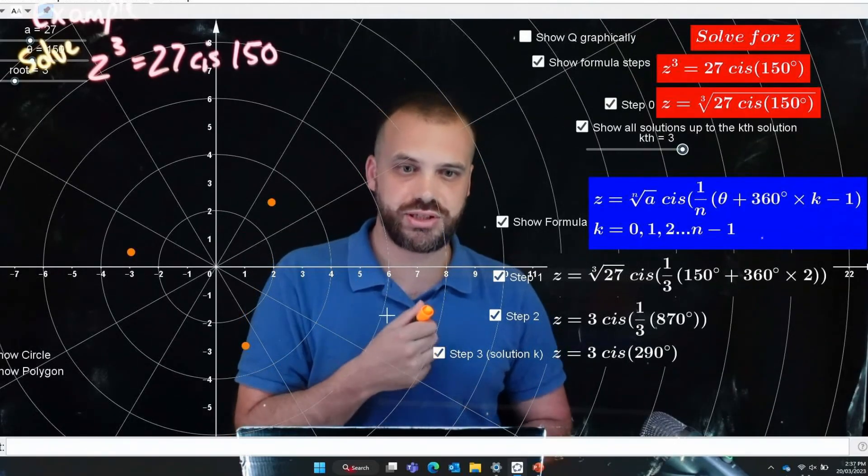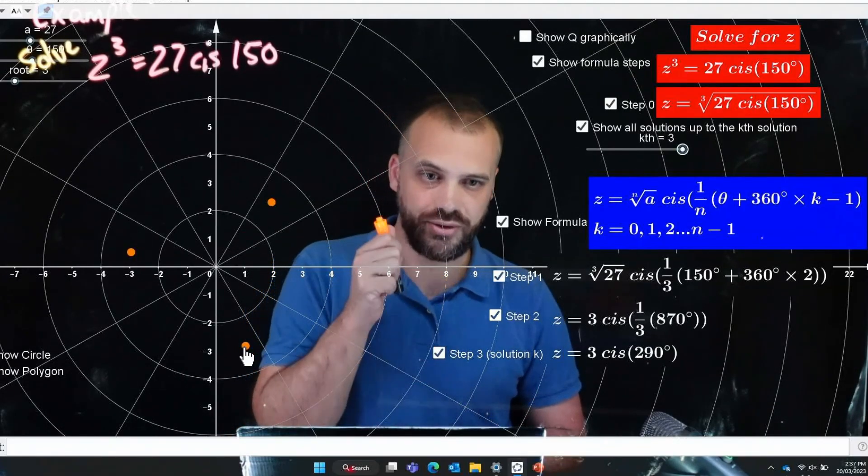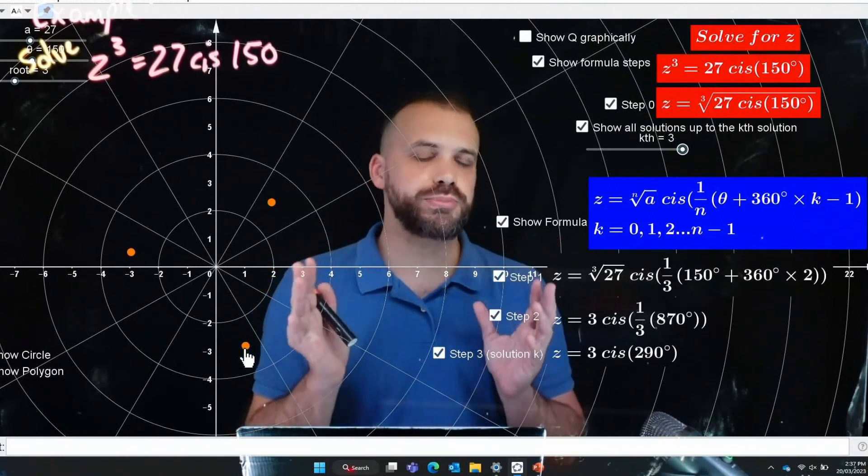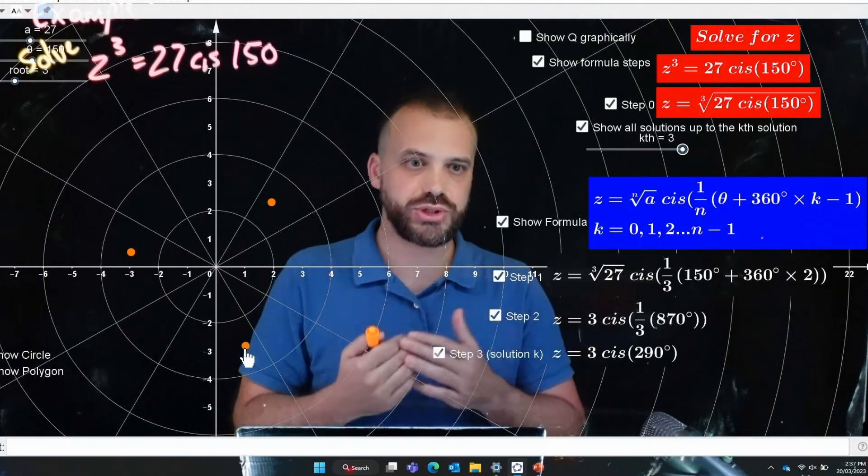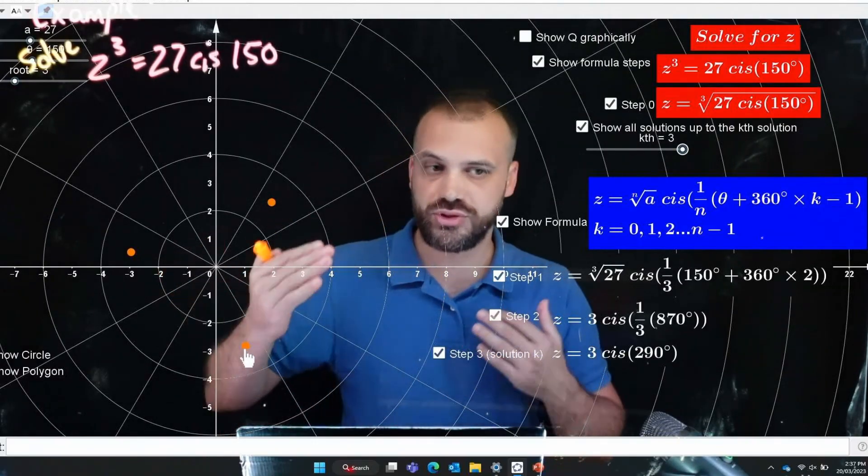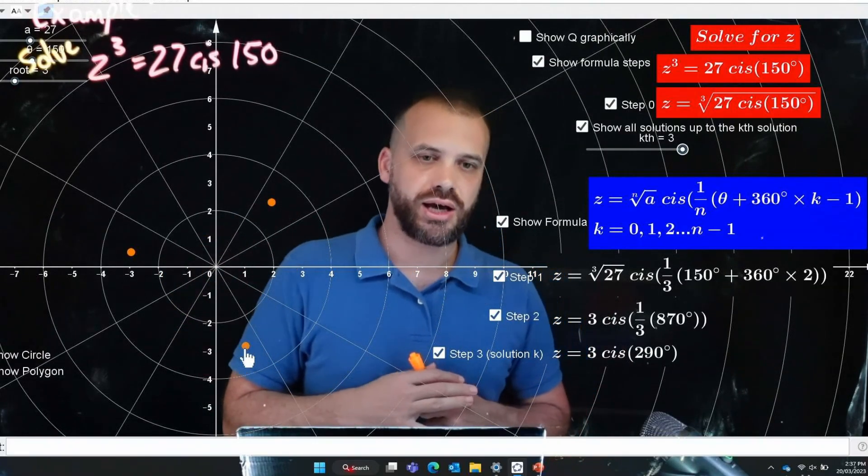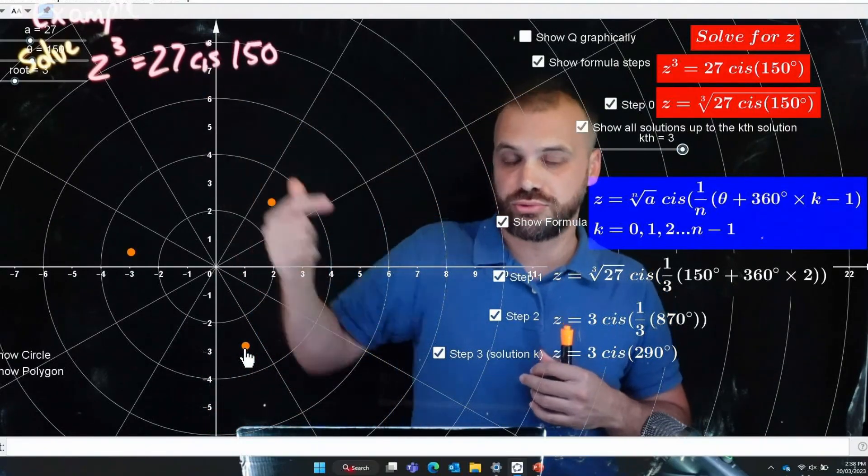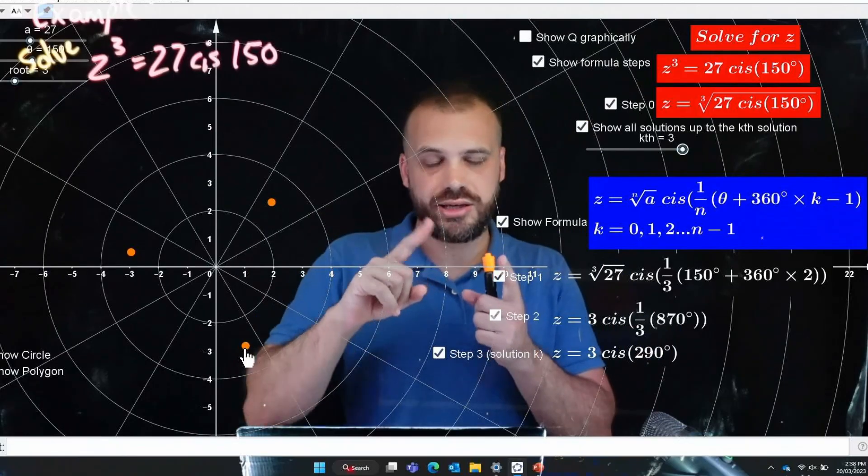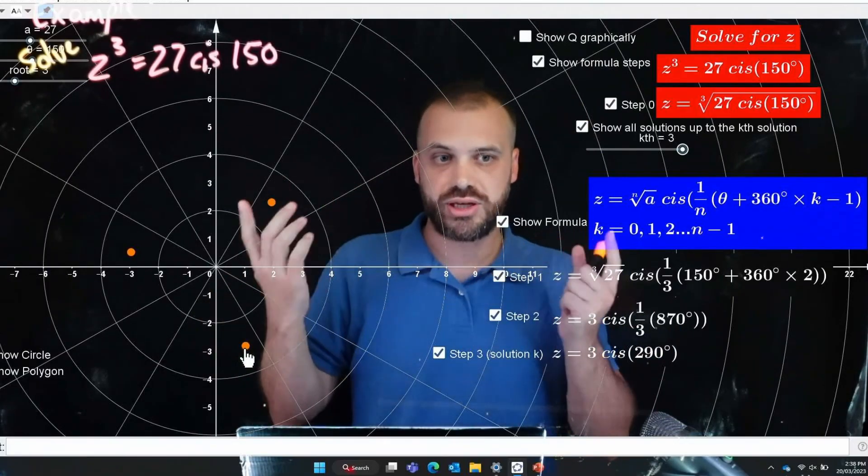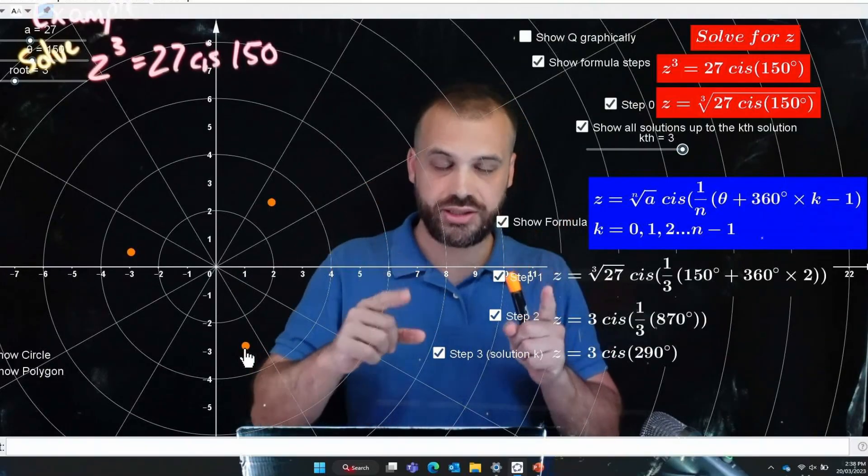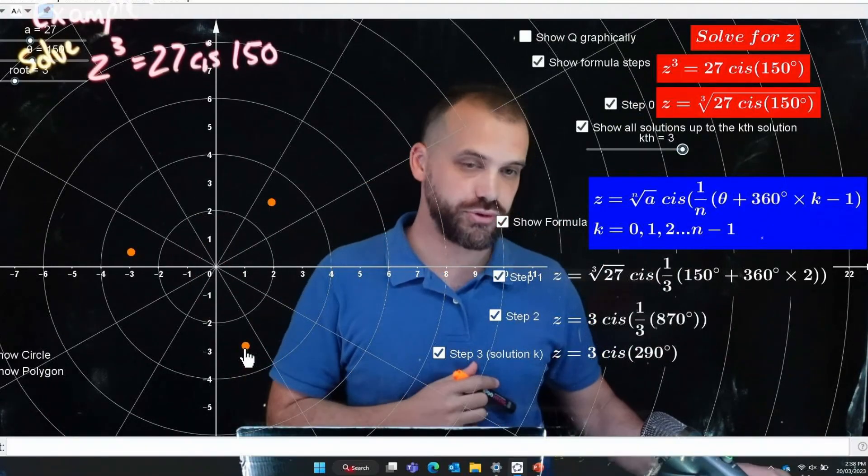I've shown you the formula, it could be useful in a complex unfamiliar question if you're trying to find like the 48th solution or something but for the most part if you're trying to find the nth root just think n equally spaced things around a circle. All right that's it, think geometrically, you can't go wrong.